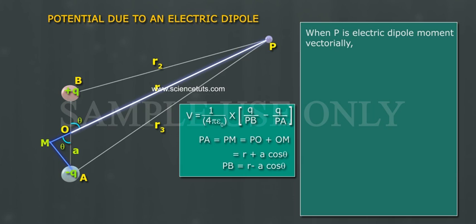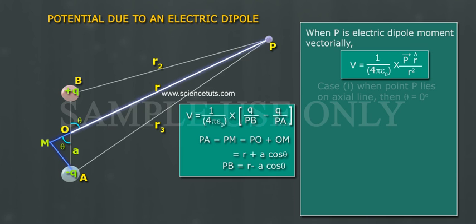When P is electric dipole moment vectorially, V is equal to 1 by 4 pi epsilon naught into P bar R cap by R square.